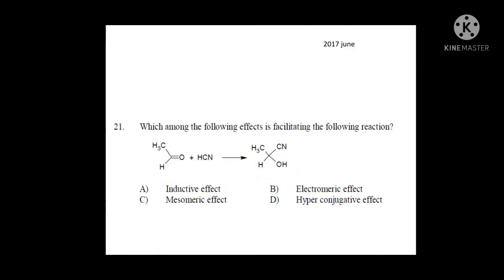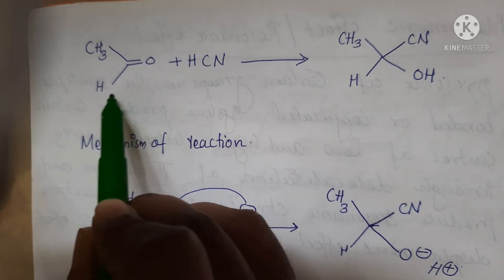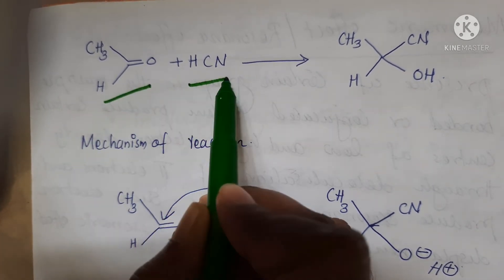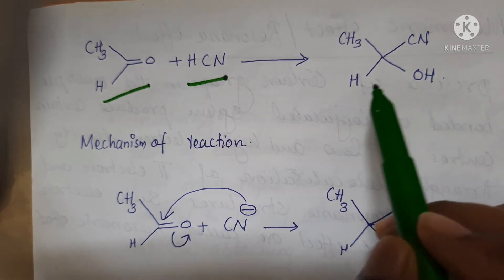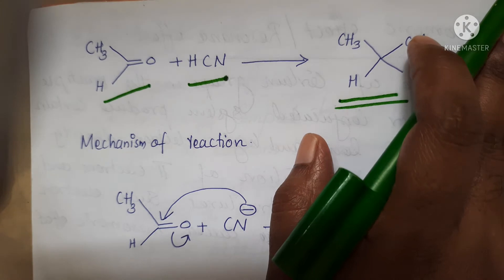Question: Which among the following effects is facilitating the following reaction? Option A: Inductive effect. Option B: Electromeric effect. Option C: Mesomeric effect. Option D: Hyperconjugative effect. Now let's start the reaction. Acetaldehyde reaction with hydrogen cyanide gives the cyanohydrin product.